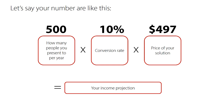Let's go back to a chart which I showed you in a previous lesson where you're able to work out what your income is going to be by knowing these numbers, but in particular the conversion rate. On the left you'll see 500 people — that's how many people you present to per year. The conversion rate is 10%, which is what you should be expecting from any presentation on average. I've changed the price down to $497.